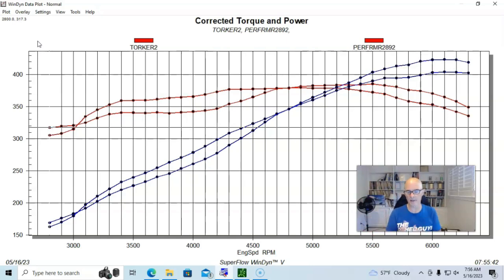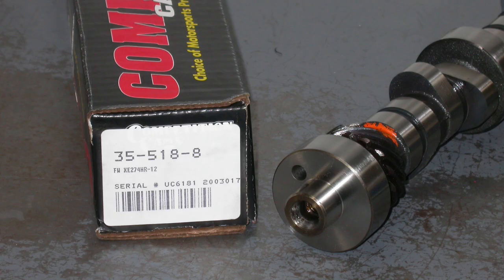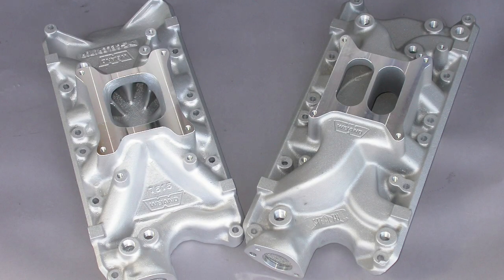This is kind of typical of single plane dual plane stuff. Usually there's a crossover between the two where the single plane might start making more power. Below that the dual plane makes more power. Where that crossover happens is dependent on a lot of things. It depends on the motor that you're testing it on, how much camshaft it has and where it kind of wants to rev, and then also the displacement and the particular intake manifolds that you're looking at.